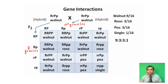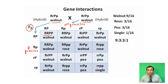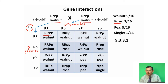When two walnut breeds were hybridized, in the F2 generation, walnut was obtained where two dominant genes are present, that is, capital R and capital P. When two dominant genes R and P are present, it develops into walnut-shaped comb. Out of sixteen, nine were walnut, three rose, three pea-shaped comb, and one with single.